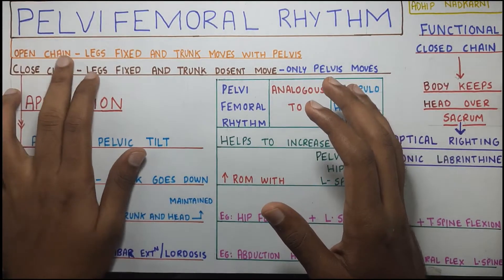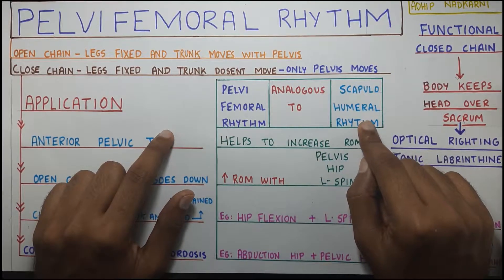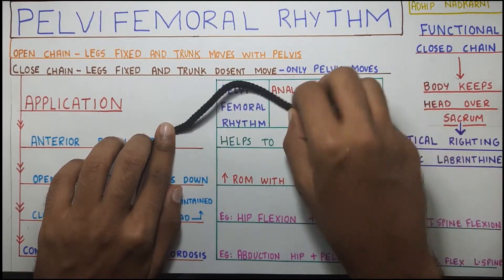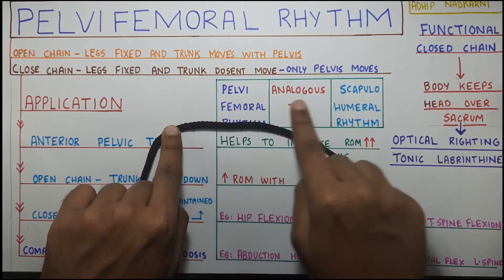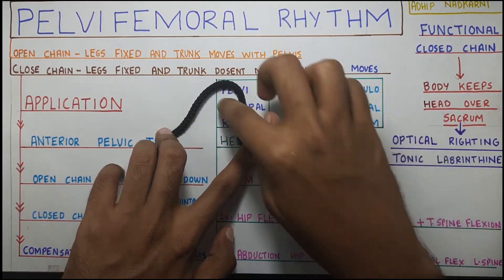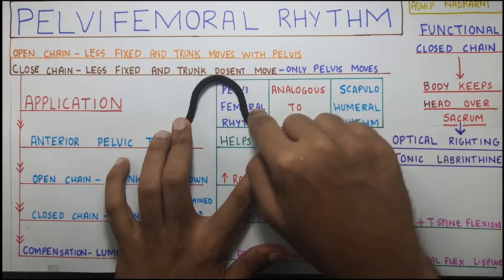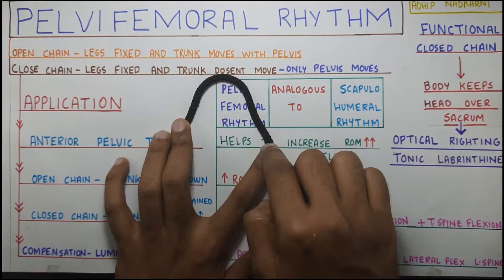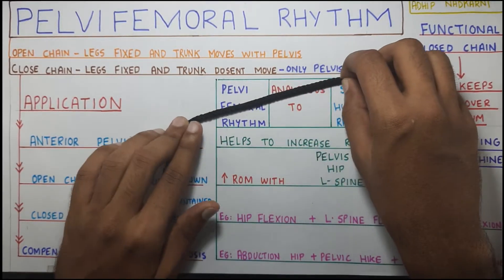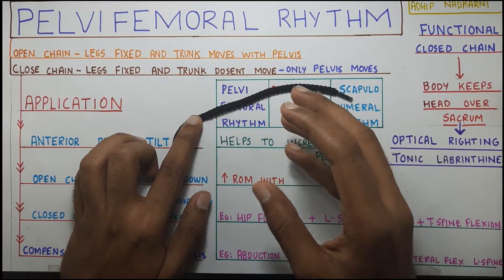Open chain means one end of the chain is fixed and the other end is open to move. Closed chain means both ends of the chain are fixed. If we take a thread and fix it proximally and move it distally, this is an open chain. In a closed chain, when you do a movement at one point, you can see compensatory movements happening at other places too because both ends are fixed. In open chain, movement will happen only at that spot.